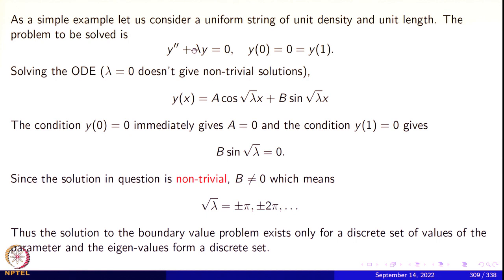Suppose lambda = 0. Then we get y'' = 0, whose solutions are a + bx. Putting x = 0 gives a = 0, so the solution is bx. Putting x = 1 forces b = 0, so the function is identically 0. Lambda = 0 is not an eigenvalue. This condition that the solution must not be identically 0 is very important. In linear algebra, for an n×n matrix A, lambda is an eigenvalue if there is a non-zero vector v such that Av = lambda*v. The eigenvector must not be zero, and analogously the solution must not be identically 0.